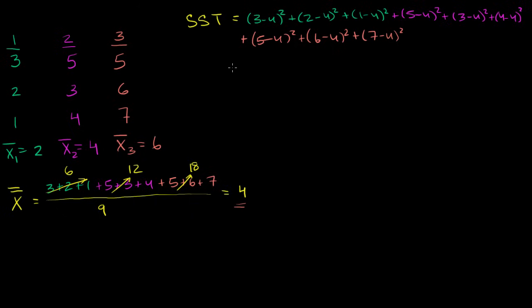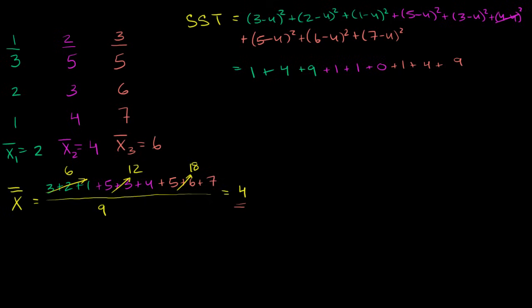Working through the arithmetic: 3 minus 4 is negative 1, squared is 1. Negative 2 squared is 4. Negative 3 squared is 9. Then 5 minus 4 is 1, squared is 1. 3 minus 4 squared is 1. 4 minus 4 is 0. For the last three: 5 minus 4 squared is 1. 6 minus 4 is 2, squared is 4. And 7 minus 4 is 3, squared is 9.